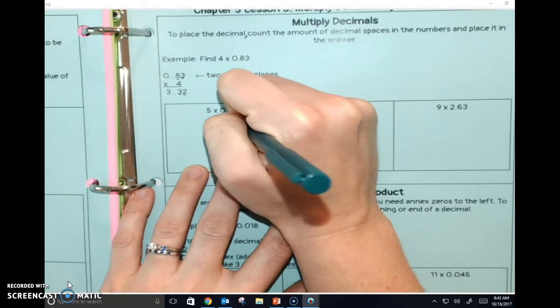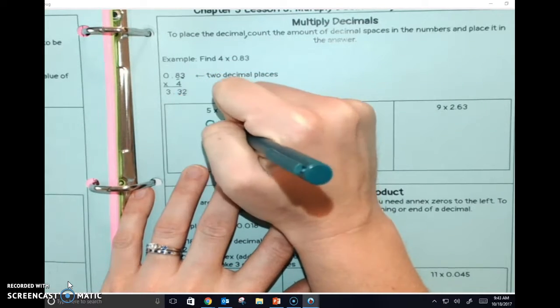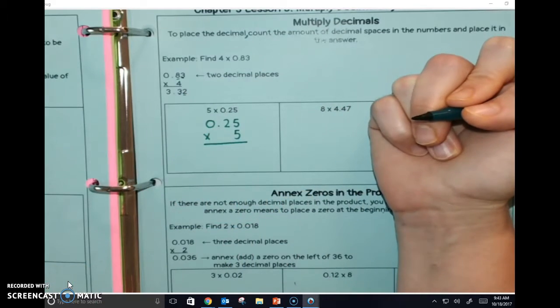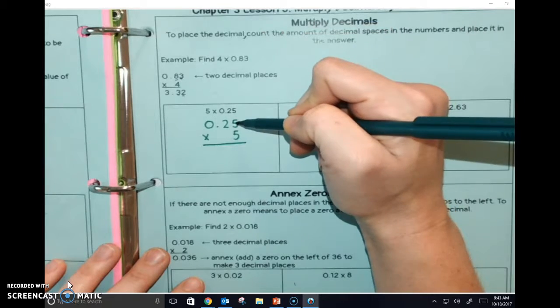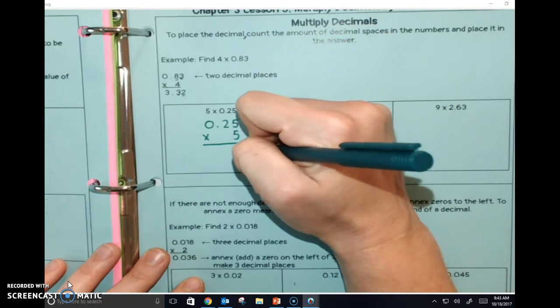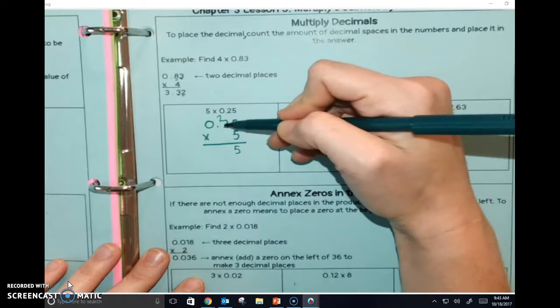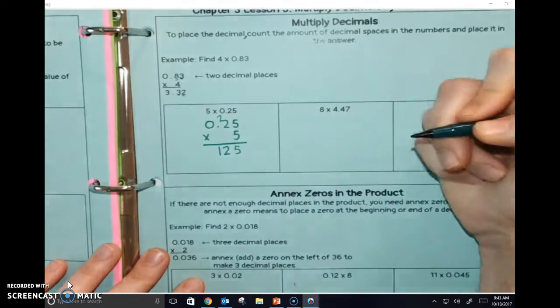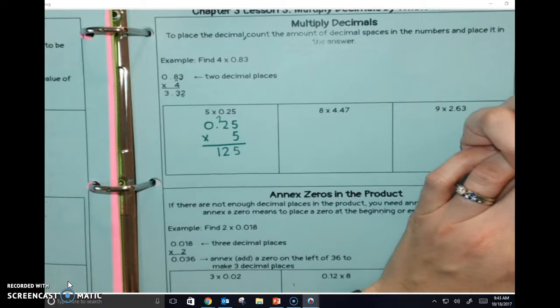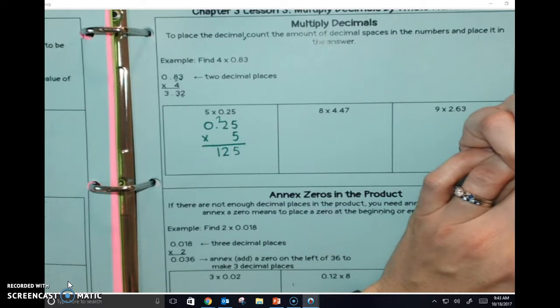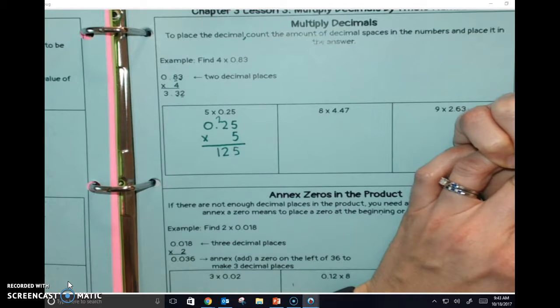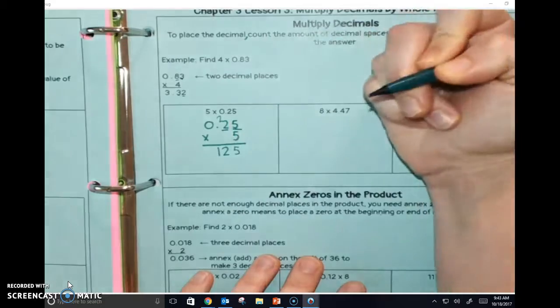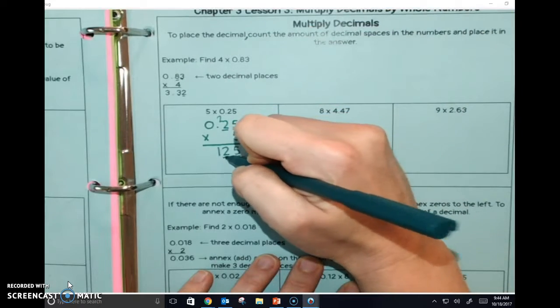So 0.25 times 5. We're just going to multiply this at first like it's regular whole numbers. So our 5 times 5 is what, guys? 25. Then we have 10 plus 2 is 12. Raise your hand if you know how many decimal places there's going to be. I said raise your hand, Ava. Two, because there's one, two here. So we're going to have one, two here.